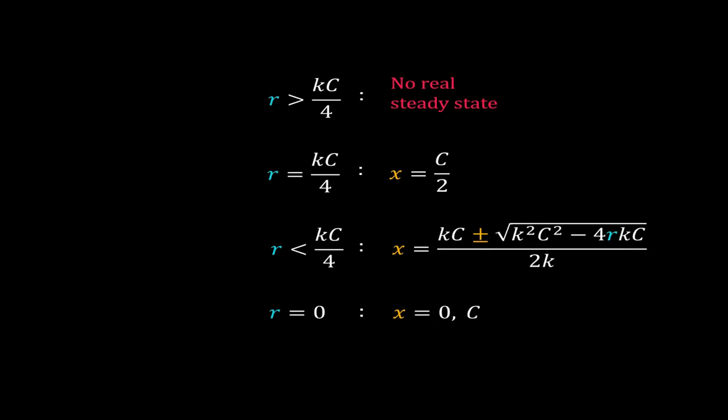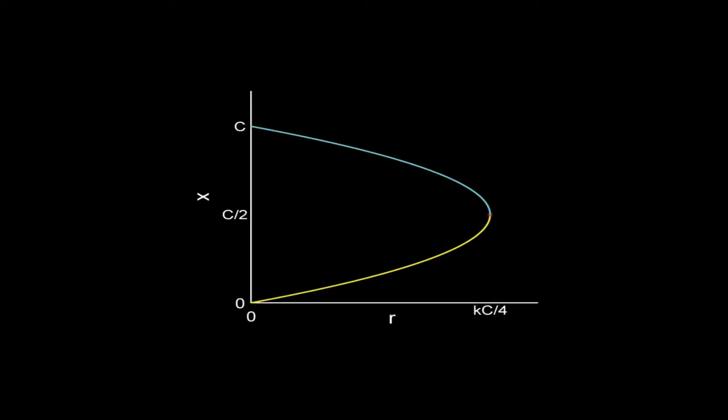Let me summarize what we have got. When r is greater than kc/4, there is no real steady state. When r equals kc/4, there is only one steady state. When r lies between 0 and kc/4, there are two steady states. So the number of steady states of this system changes with the value of r. Here I represent that graphically: r is on the horizontal axis and the steady state values of x are on the vertical axis. We have a parabola with the vertex at r equal to kc/4, where the steady state is x equal to c/2. Beyond this point there is no steady state; below this point the system has two steady states.